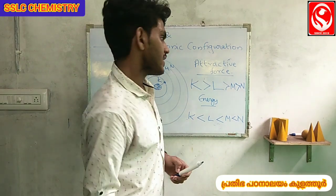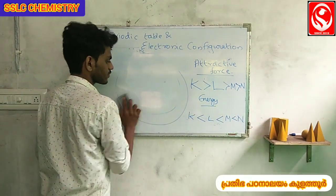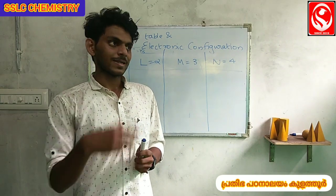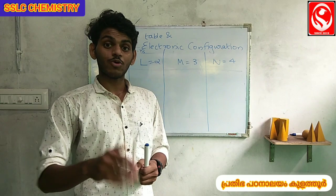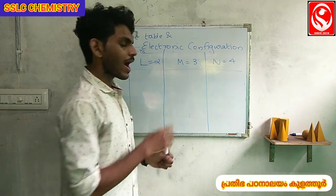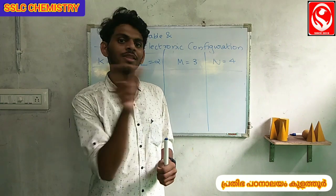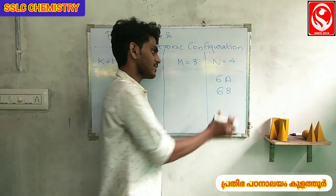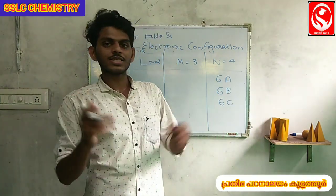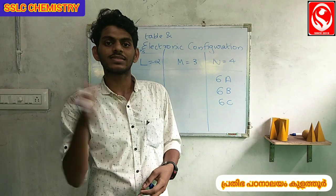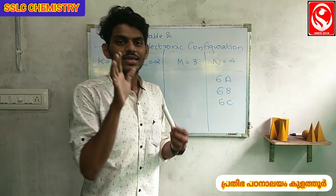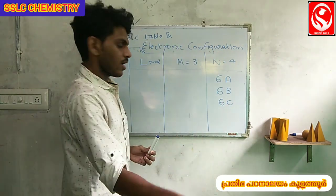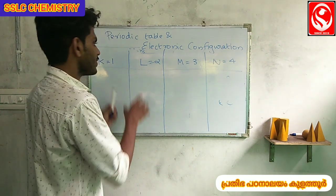Here we have two main classes of subshells. The sub-shell concept is like a class with divisions. If one class has divisions — for example, class 6 has 6A, 6B, and 6C — similarly, each shell has sub-shells. We call these sub-shells.